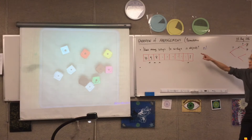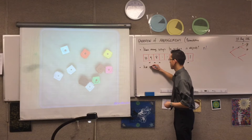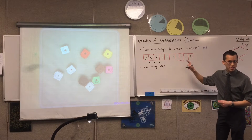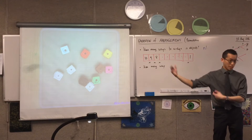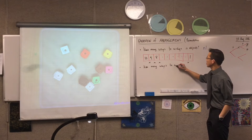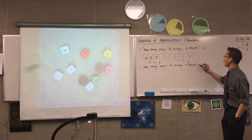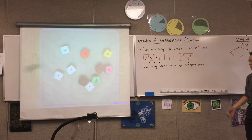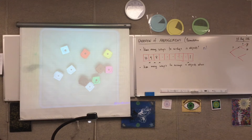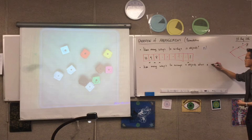So now my next point is not how many ways to arrange n objects, but how many ways to arrange n objects when I've got some number of identical elements, or identical objects. I need another letter here — for reasons that will become clear later, I'm going to use the letter a. I'm going to reserve k for something special later. So: how many ways to arrange n objects when a are identical?